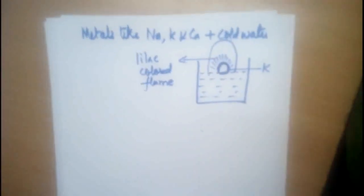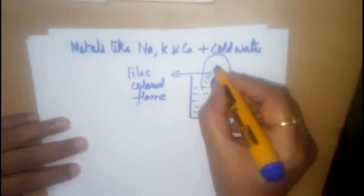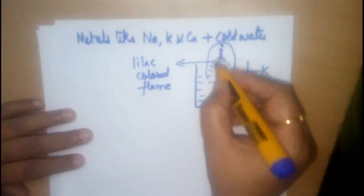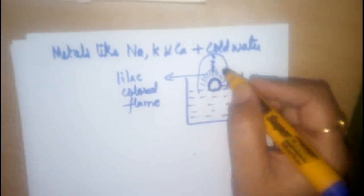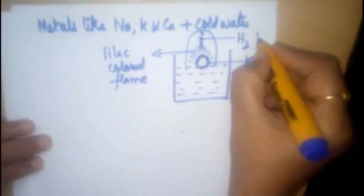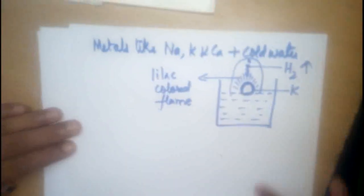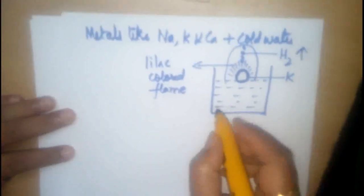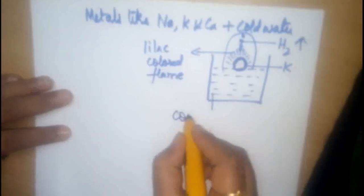Then we also observe lilac-coloured flame, something like this. Yes, the colour of the flame is purplish. It is purplish, lilac-coloured flame. And we also observe the bubbles coming out. Yes, it is nothing but the hydrogen gas is evolved.